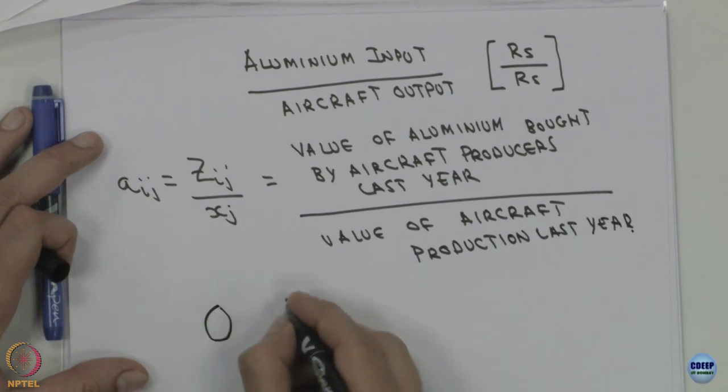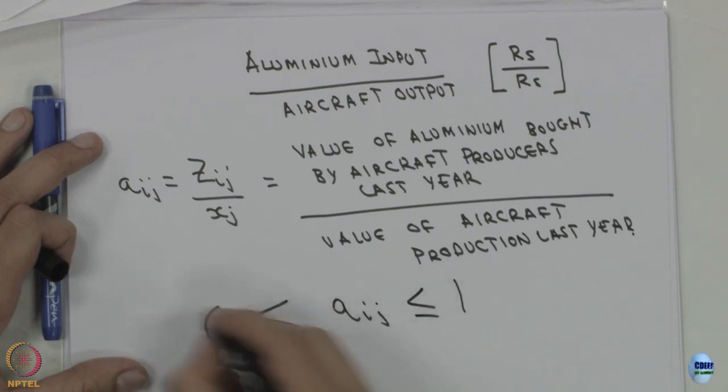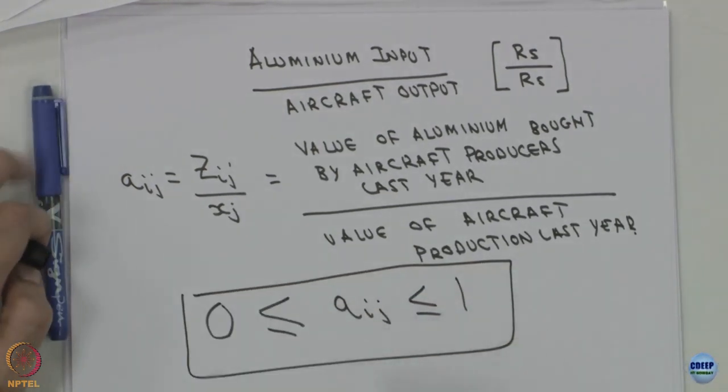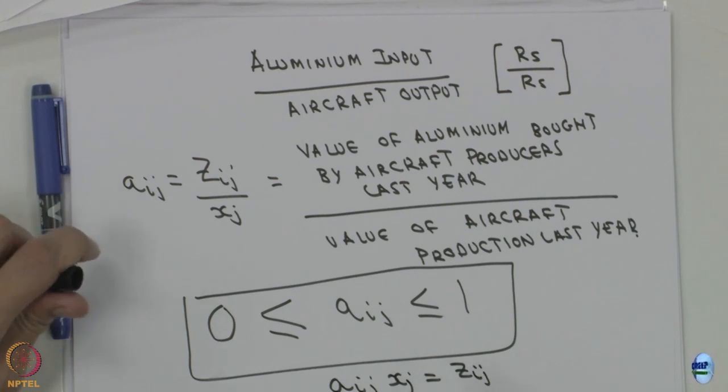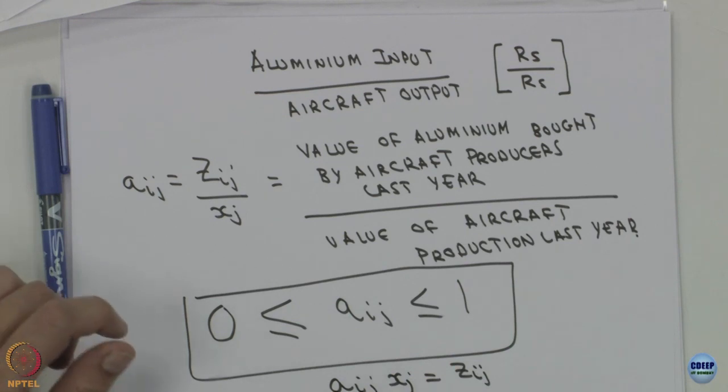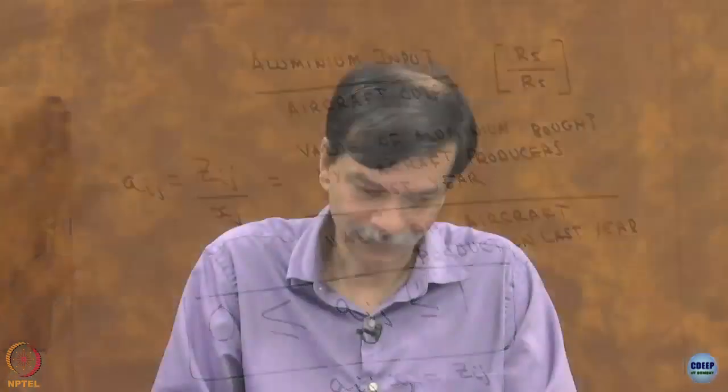Now, a_ij has to be between 0 and 1; it cannot be negative. It is a physical amount of quantity that is required and it cannot be greater than 1, because the total value added in that sector has to be a combination of all value adds of different components, and since none of them can be negative when we add it up. So a_ij times x_j equals z_ij — this is the basis. These coefficients are constant, which means economies of scale are ignored and this operates under constant returns to scale. In the Leontief system, the entire basis is that production operates under constant returns to scale.